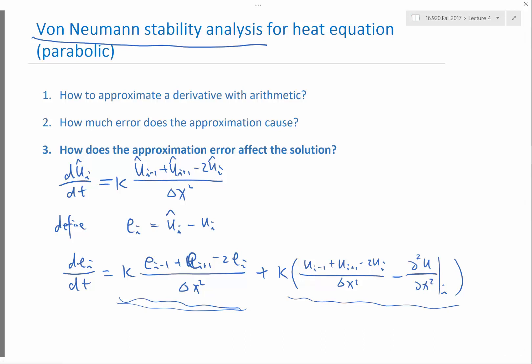It applies to the scenario where the domain is periodic, no matter in 1D, 2D or 3D. As long as the spatial domain is periodic and the grid points are uniformly distributed, then you can apply this von Neumann stability analysis.